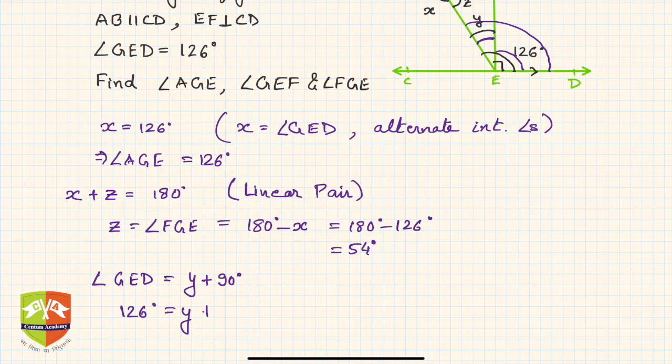So Y is equal to 126 degrees minus 90 degrees, which is equal to 36 degrees. Very easy sum, isn't it?